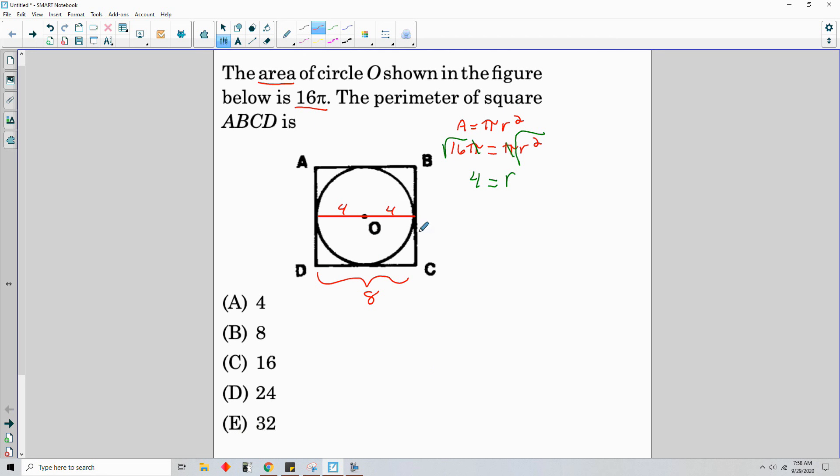Perimeter equals 4s, s being sides. So because in a square, all sides are congruent, the perimeter equals 4 times the length of each side. So the perimeter is 8 times 4, or 32. Booyah!